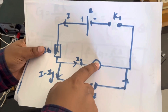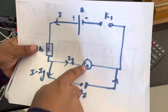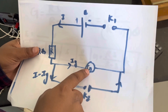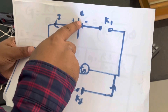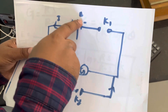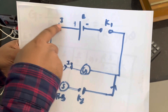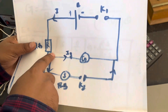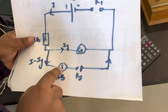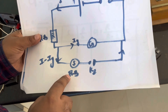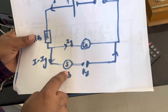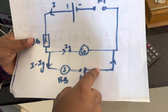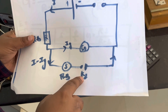This is a galvanometer where we are interested to find out its resistance — let the resistance be G. This is a battery which will provide the power source, connected through a resistance box. This is a key. We have also connected a shunt, which is another resistance box, connected in parallel to the galvanometer through another key, K2.